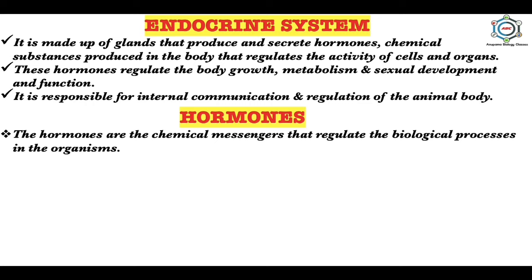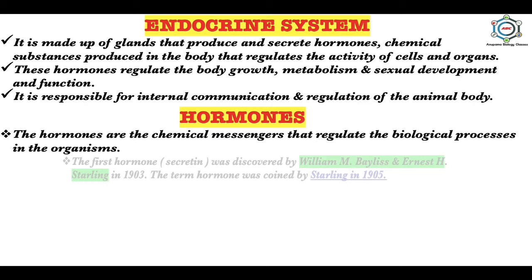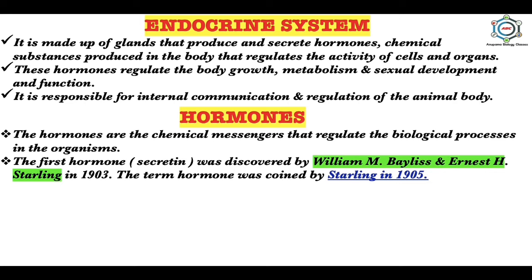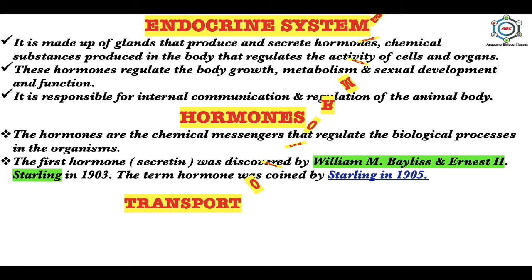Hormones are the chemical messengers that regulate the biological processes in the organism. The first hormone that was secreted was discovered by William M. Bayliss and Ernest H. Starling in 1903. The term 'hormone' was coined by Starling in 1905. Hormones means to stimulate or excite, but they also act as inhibitors.